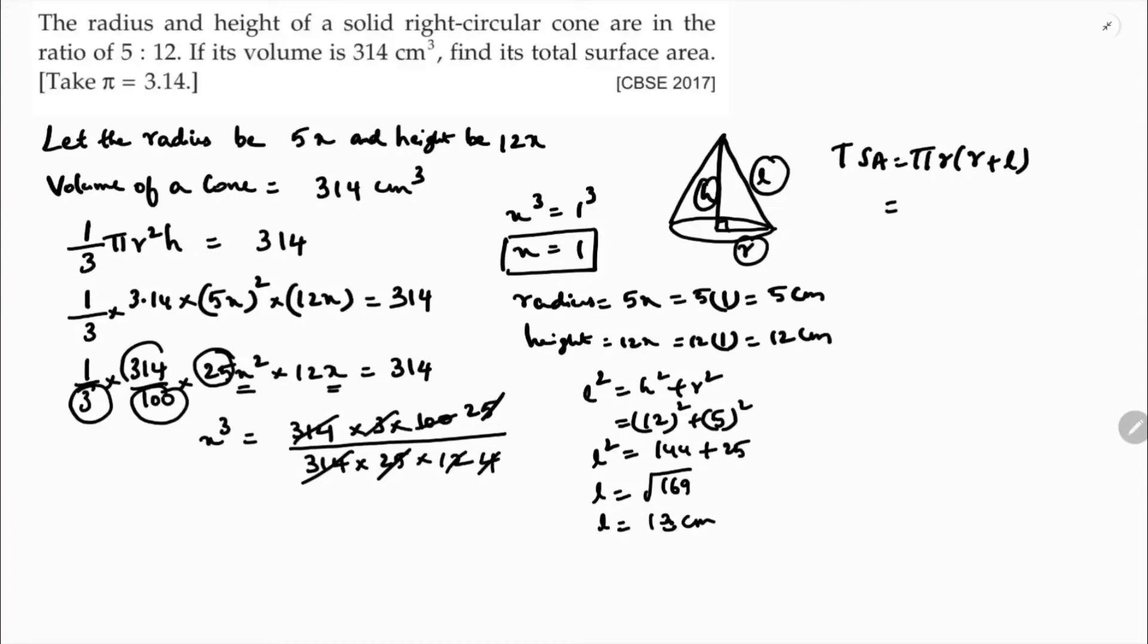Pi value is 3.14 into radius is 5 into 5 plus 13. 5 plus 13 is 18. So 3.14 into 5 is 15.70 into 18. So 15.70 into 18 is 282.6 centimeters square.